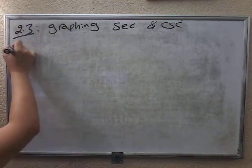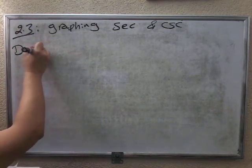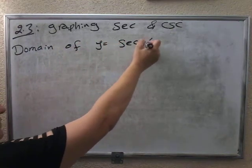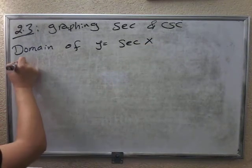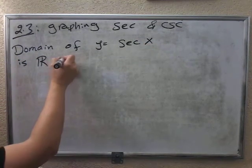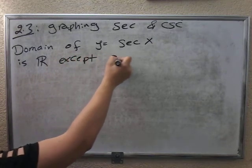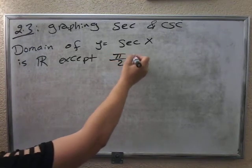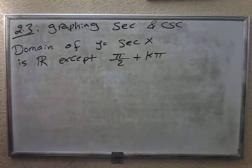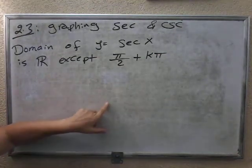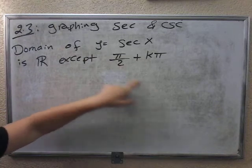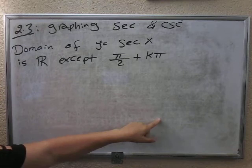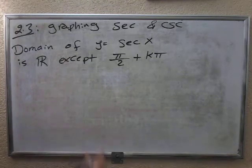To graph secant and cosecant functions, first the domain of y equals secant of x is all real numbers except pi over 2 plus k pi. The k pi means if k is 1, that's 1 pi, then 2 pi, then 3 pi, 4 pi, 5 pi, and it keeps going.